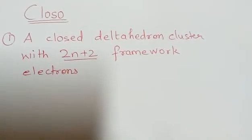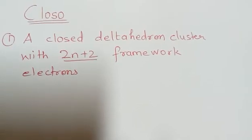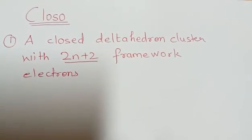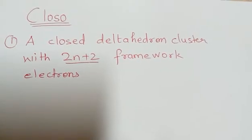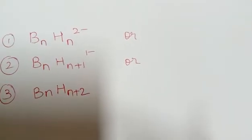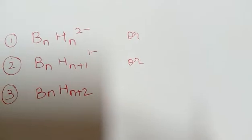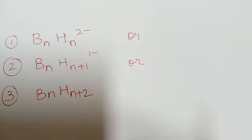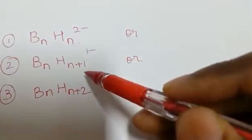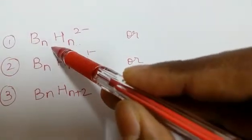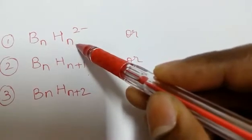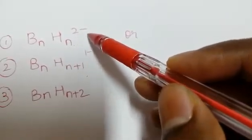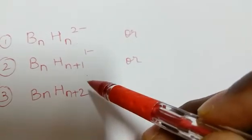The first type, Closo, is a closed deltahedron cluster with 2n plus 2 framework electrons. In order to check whether the given borane cluster geometry is Closo or not, you have to check these three formulas. Where BnHn and if the charge is 2-, then it will be a Closo structure.